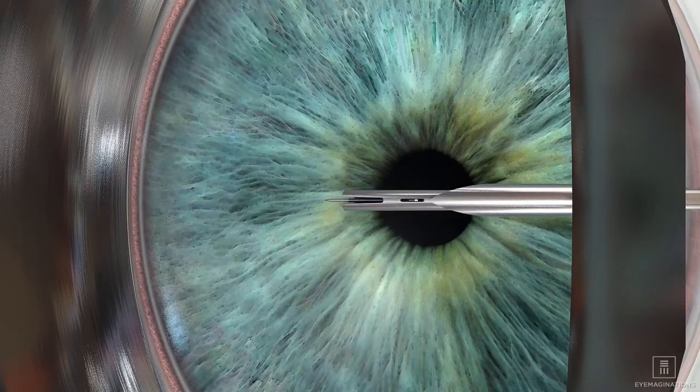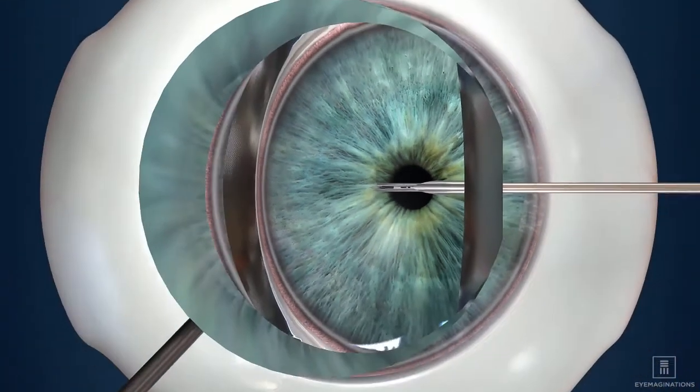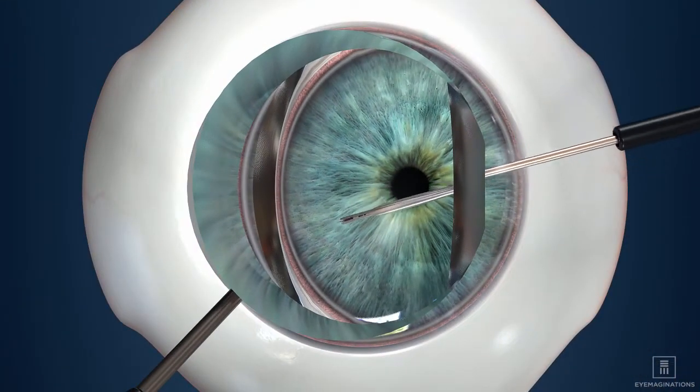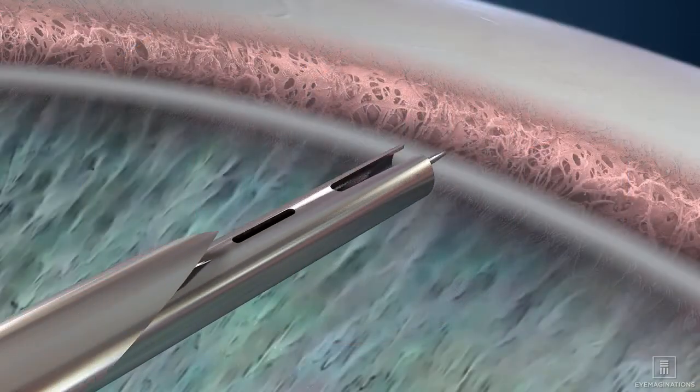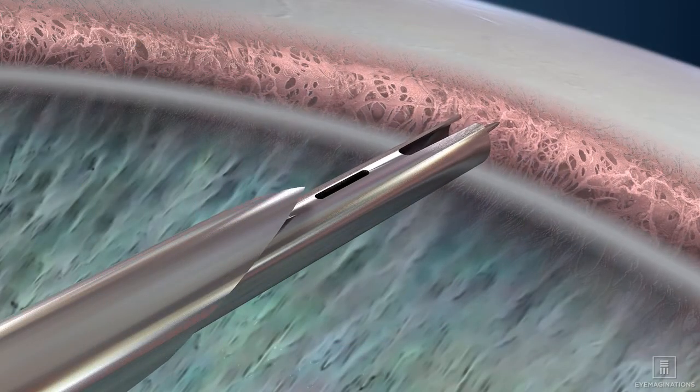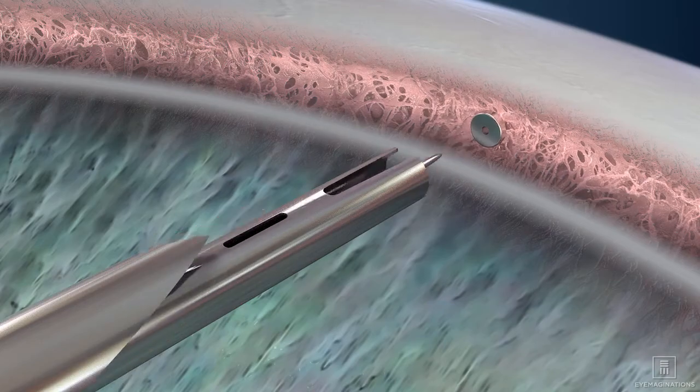A protective covering on the handpiece is retracted and the first Eye Stent Inject is placed into the meshwork of your eye, creating a tiny channel to allow fluid to drain from your eye.